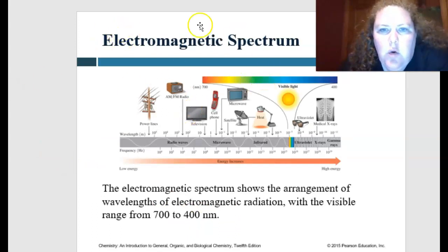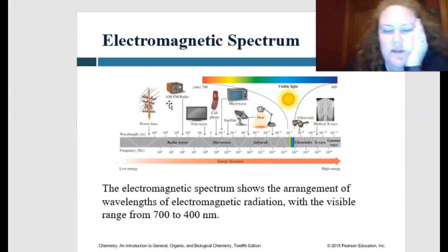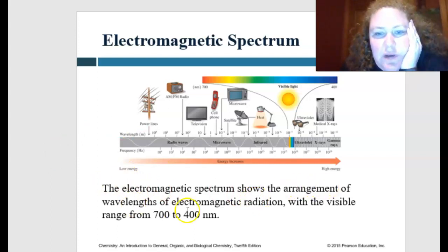Looking at the whole electromagnetic spectrum, you can see that there's a lot of different things, some that we're very familiar with. The electromagnetic spectrum shows the arrangement of wavelengths of the electromagnetic radiation with a visible range light of only being this very small area from 700 to 400 nanometers.